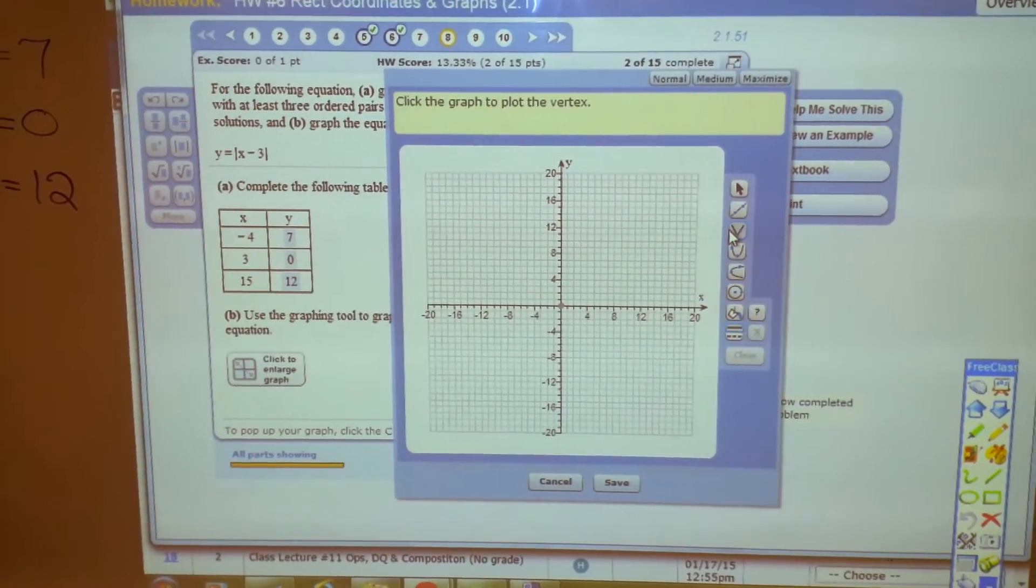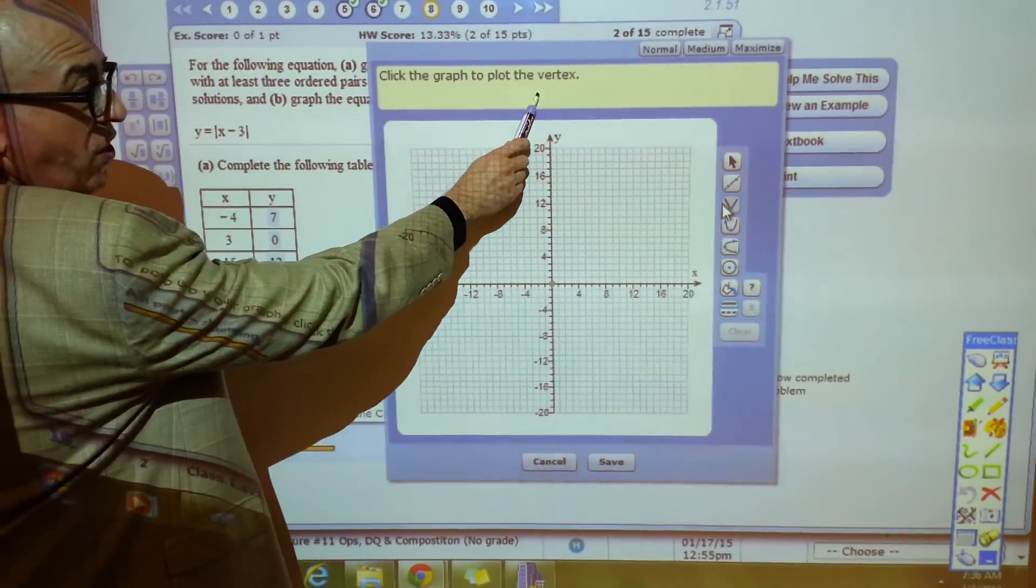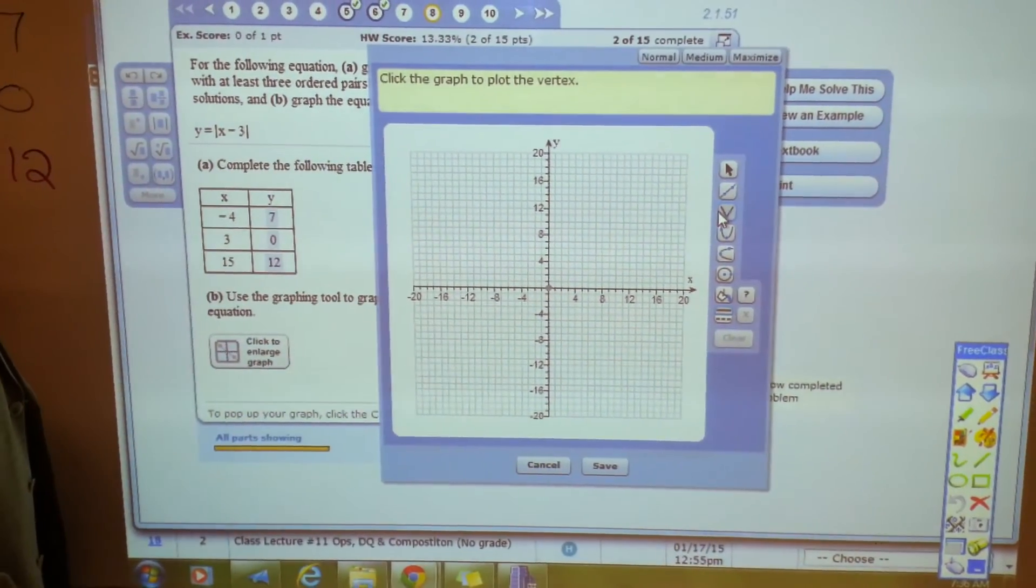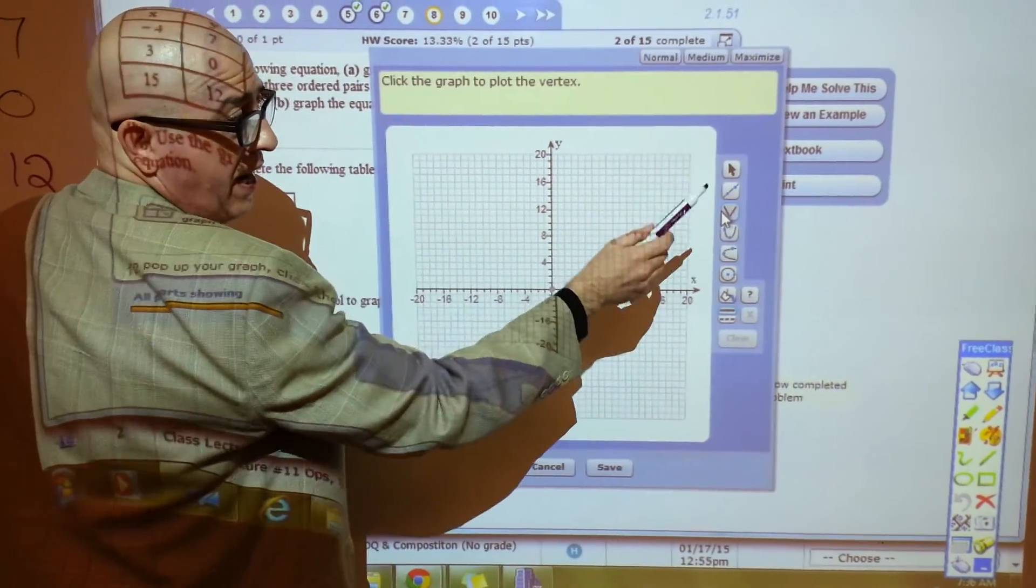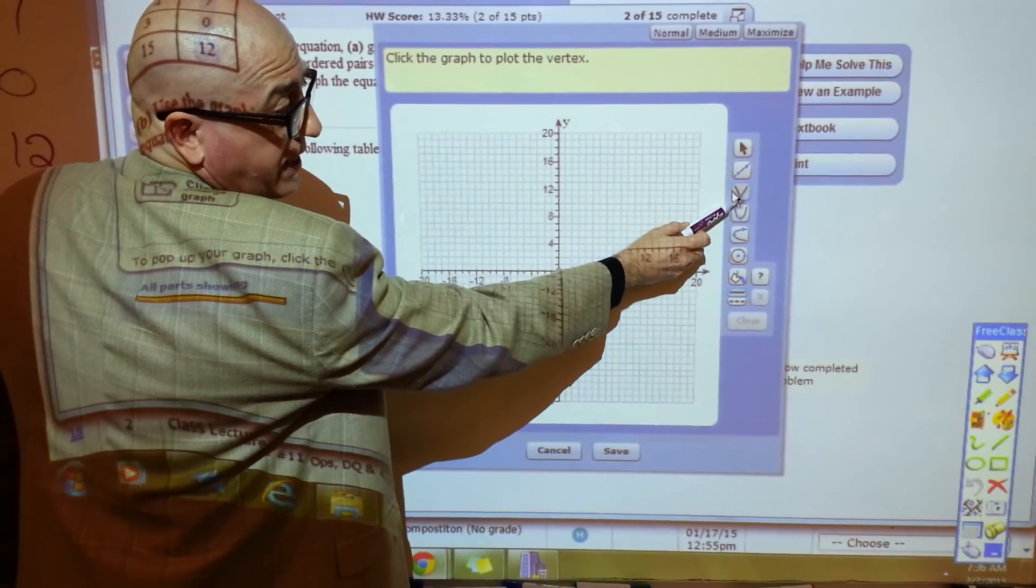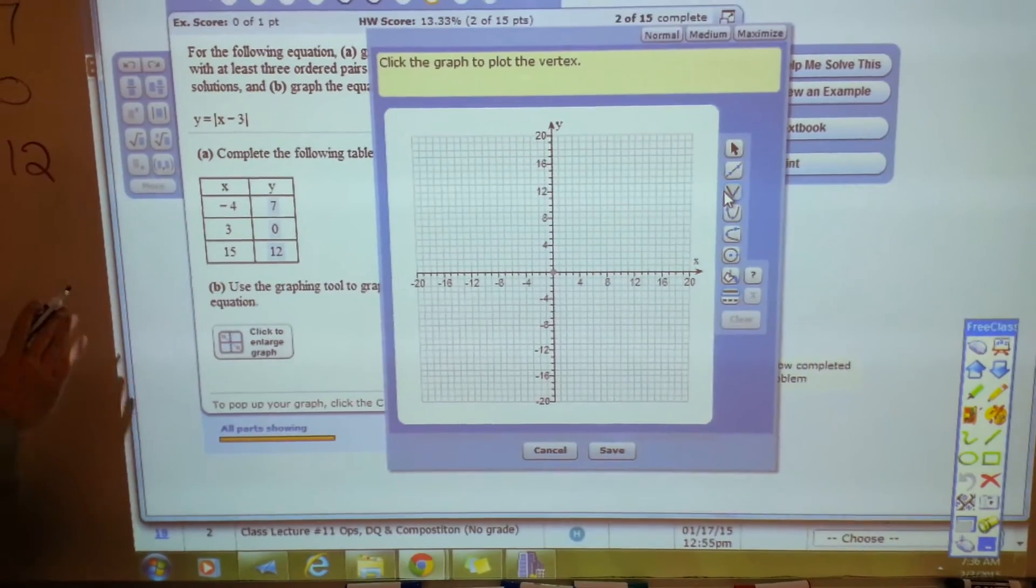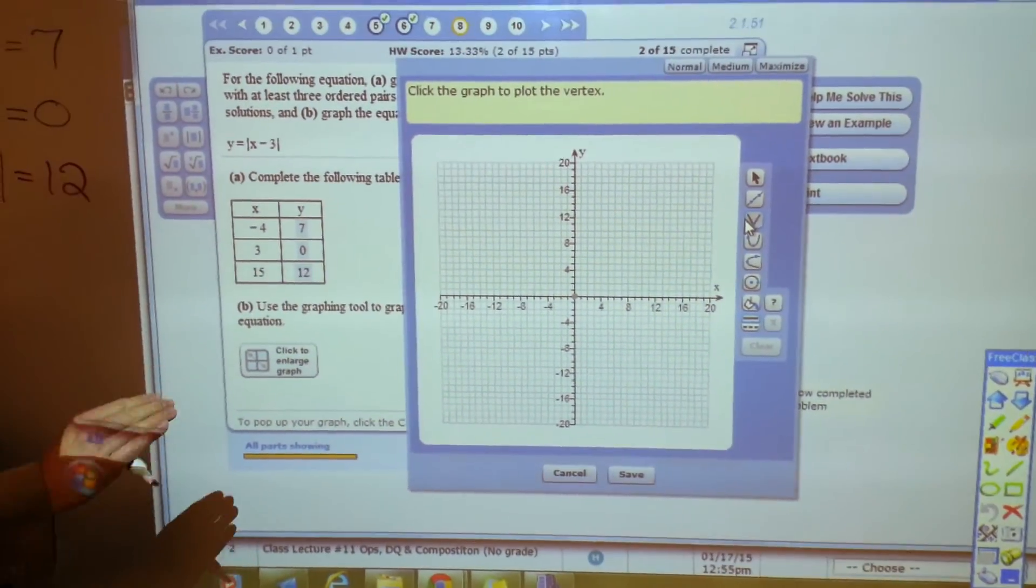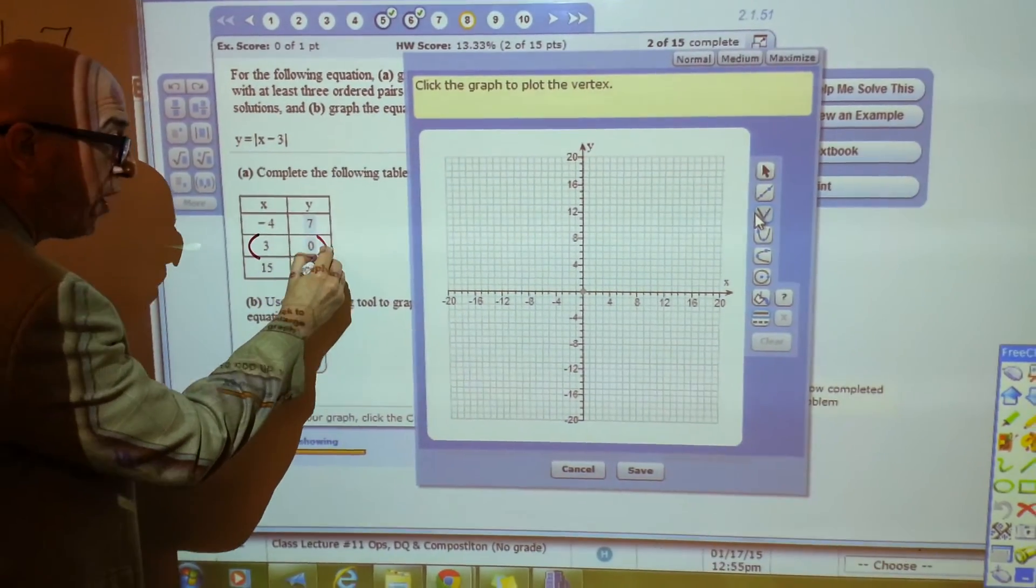But if you read the instructions, it says plot the vertex. Well, this is going to be a V-shaped figure. And if you look at the way it is, it's going to show two points. The vertex is the point in the middle. Here you're not just going to plot boom, boom, boom all three points. You plot this middle one first.